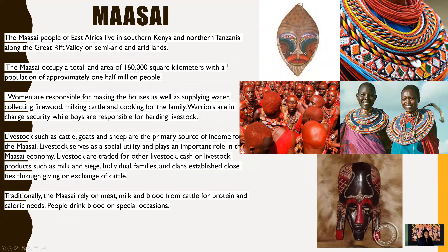The Maasai wear these beautiful necklaces — necklaces that sort of look like rings. This is a beautiful tribe and they're really nomadic. They are responsible for war; they're really a warrior tribe. When you think of Maasai, think of a warrior tribe. They rely on meat, milk, and blood from animals. Here is an example of the Maasai mask.